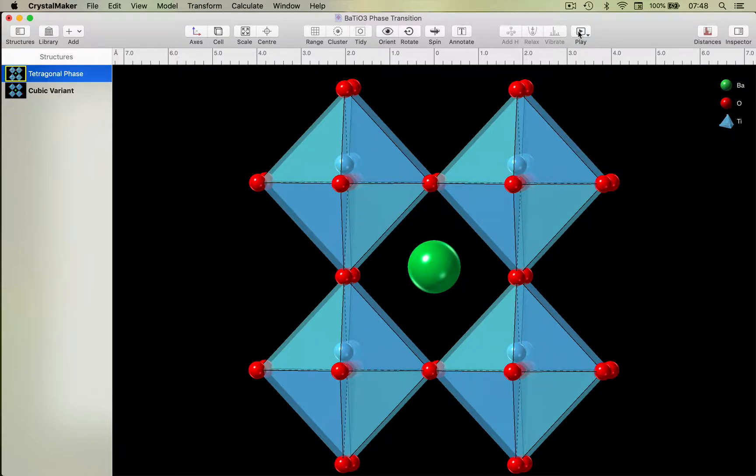I'd like to be able to produce a smooth animation by interpolating a series of structures between the two, and I can do that using the new interpolate command.